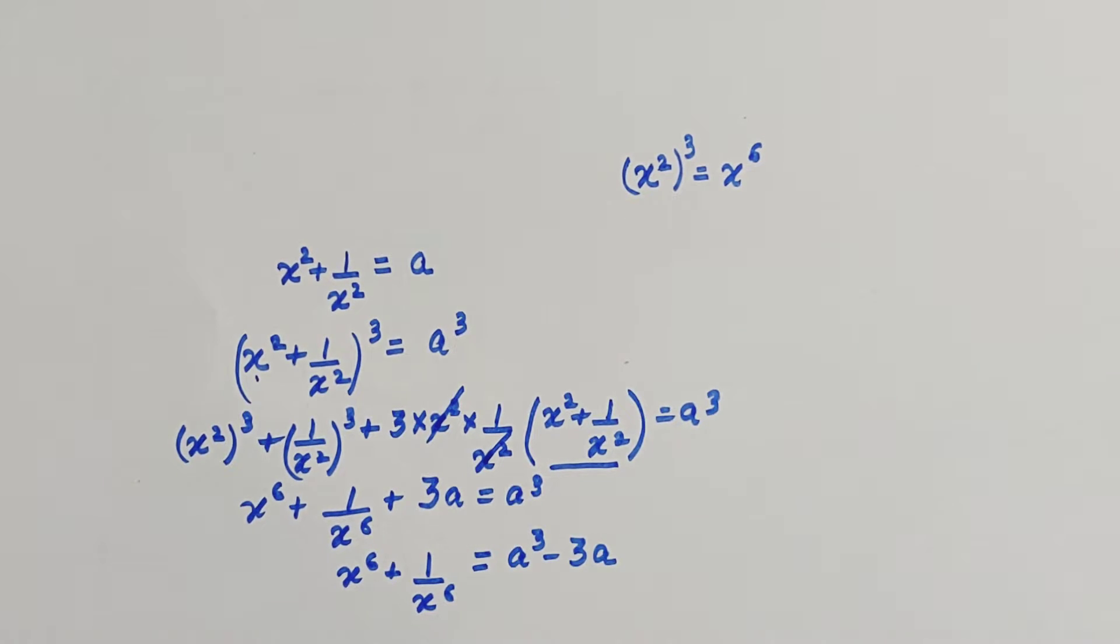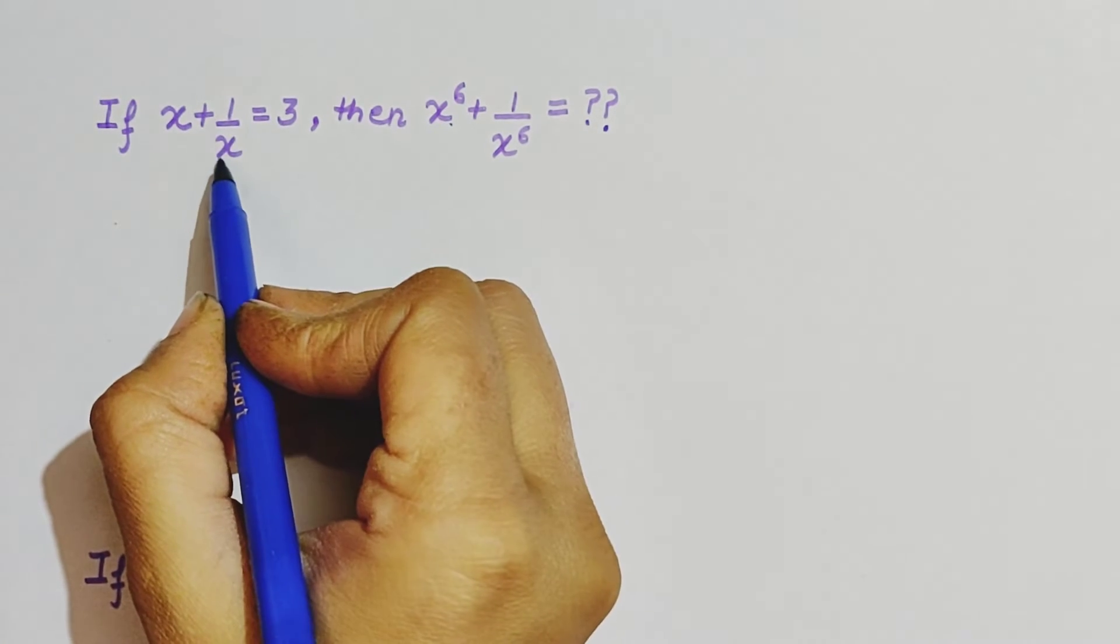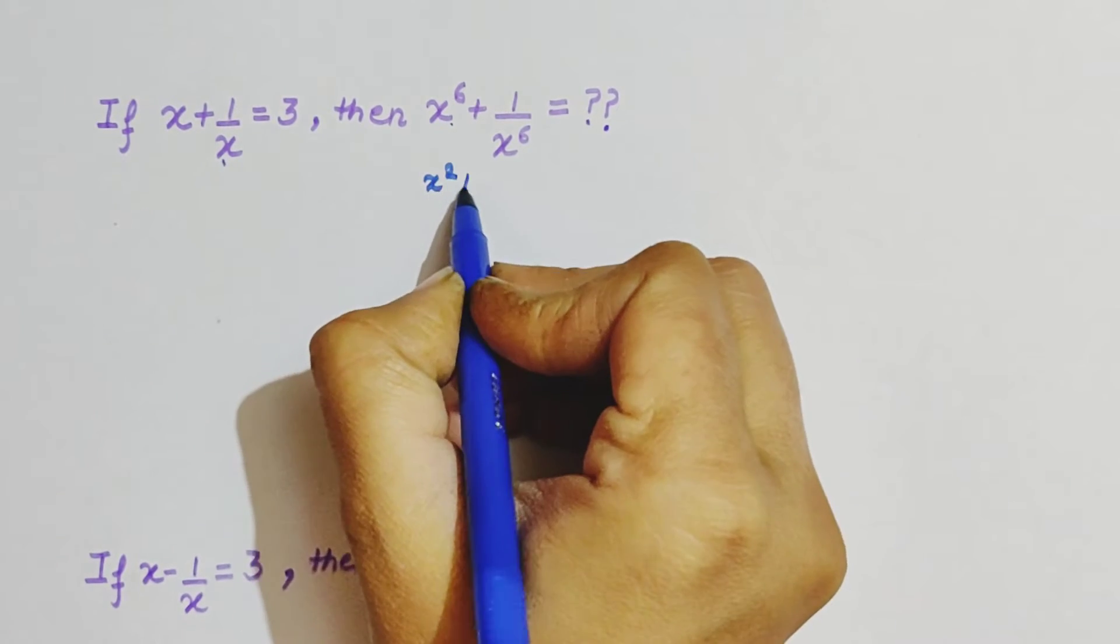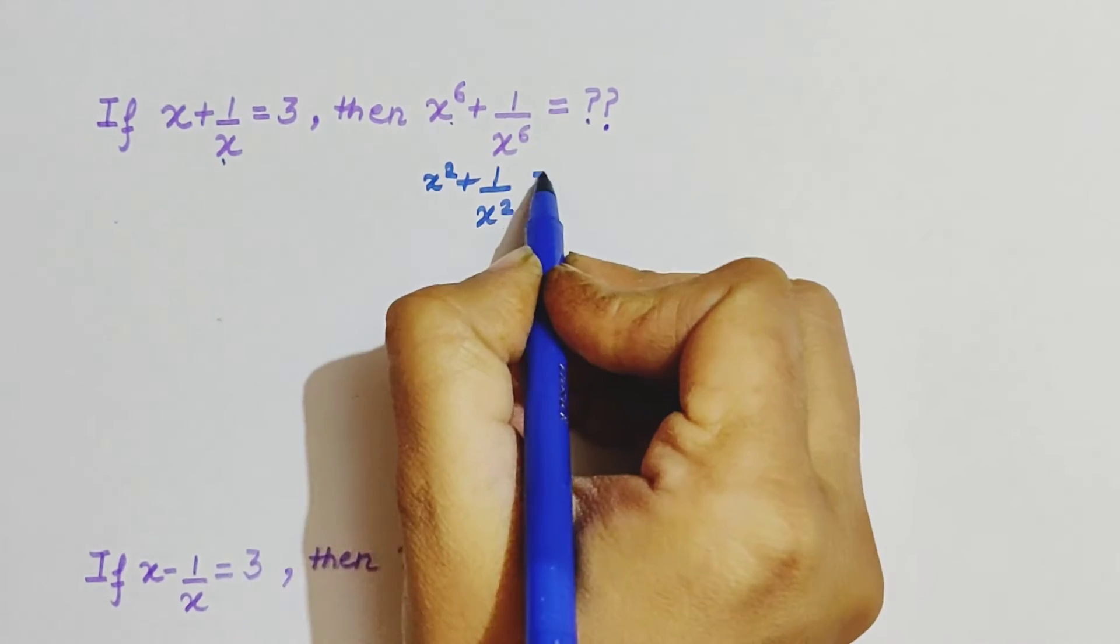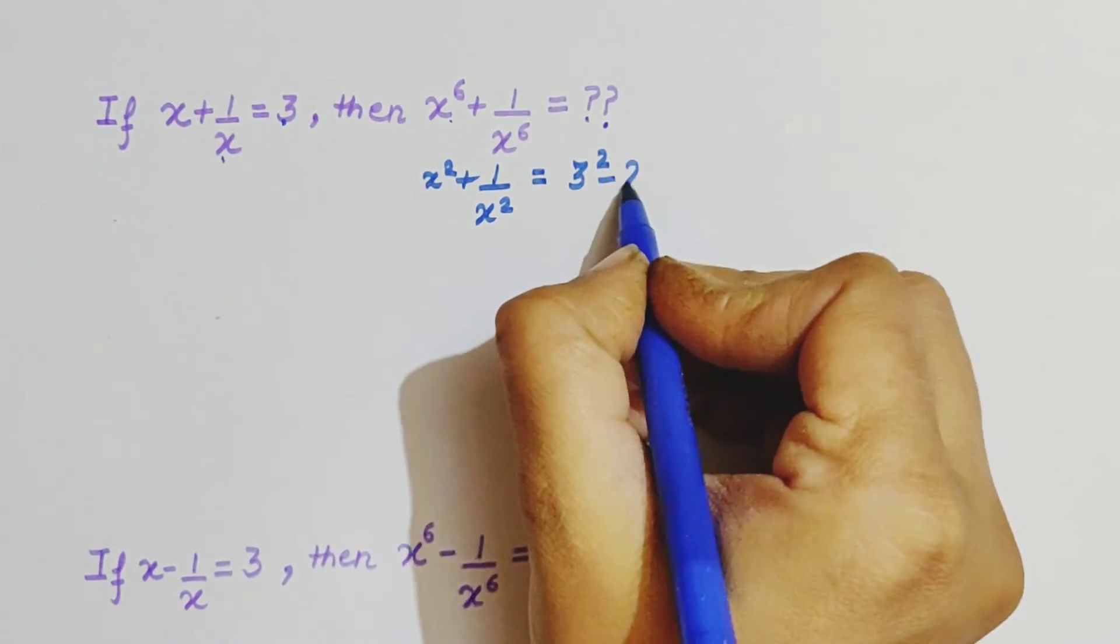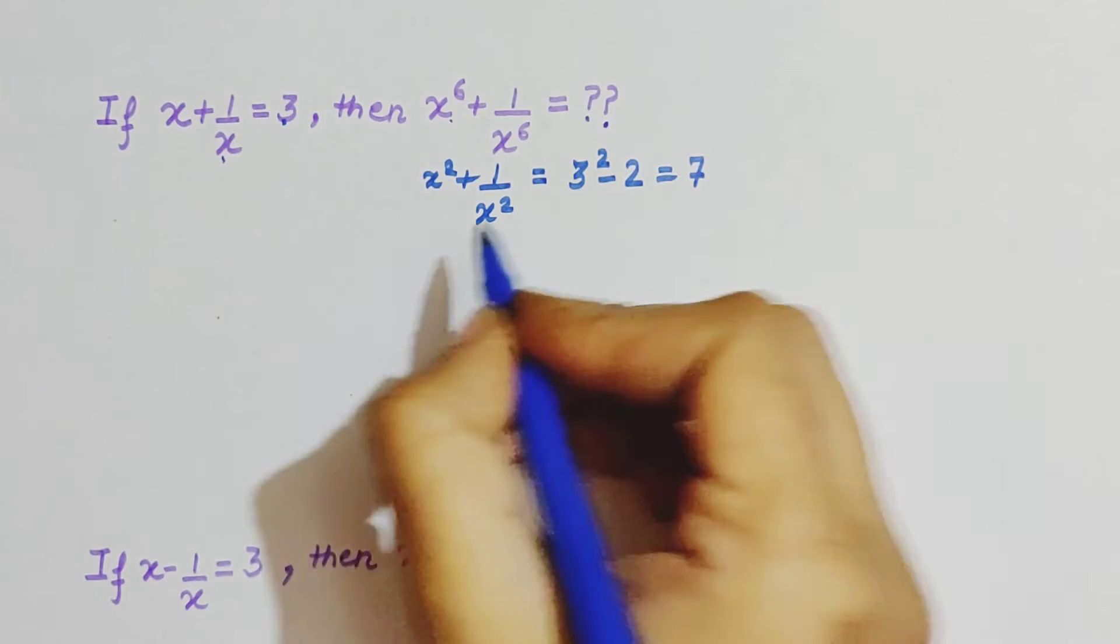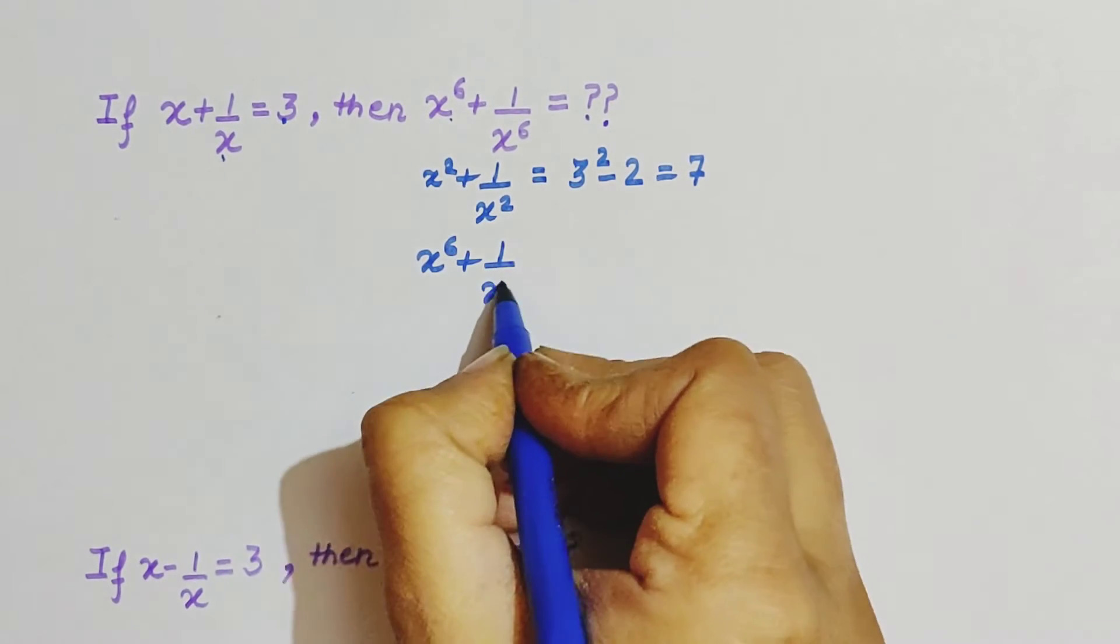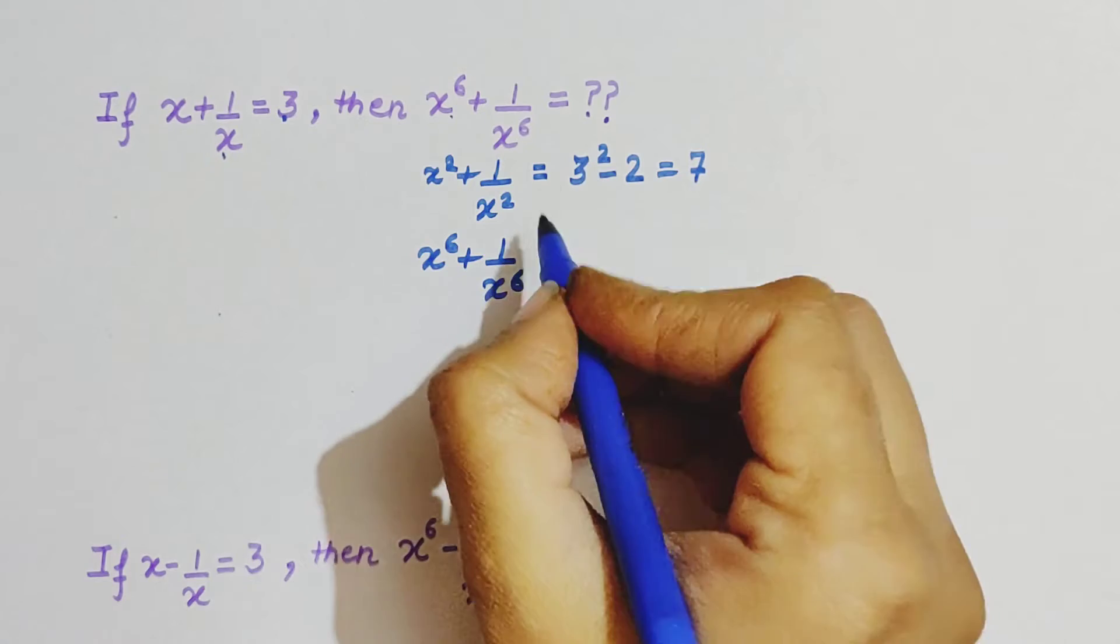Here first see this equation is given, so you can write by shortcut that will be 3 square, and since there is plus, we do minus 2, and that will be 7. Now to find x raised to the power 6, you have to cube this equation. But our shortcut is you cube this value.